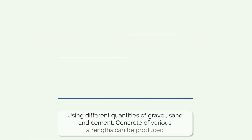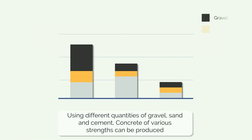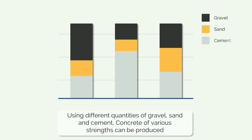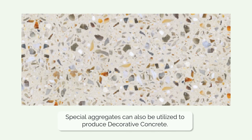By using different quantities of gravel, sand and cement, concrete of various strengths can be produced. The choice of small or large aggregate also determines the working properties of the wet cement. Small aggregates can also be utilised to produce decorative concrete.